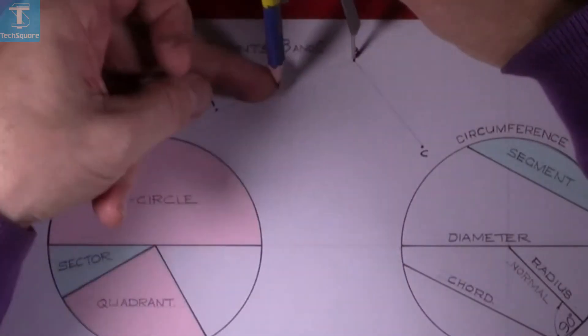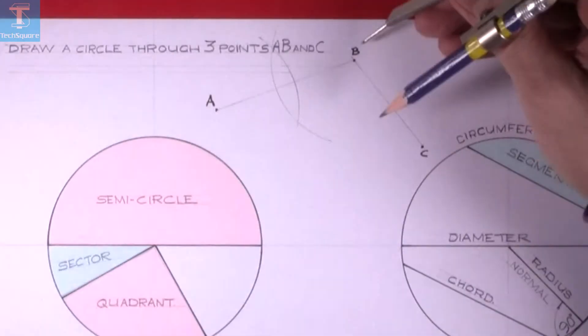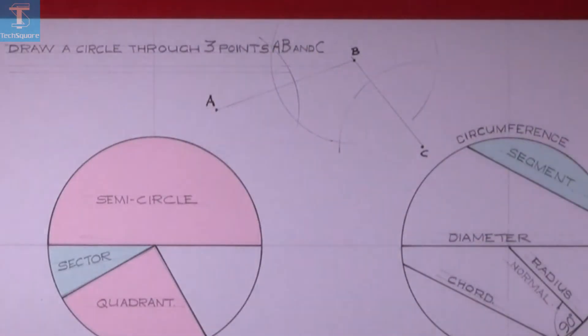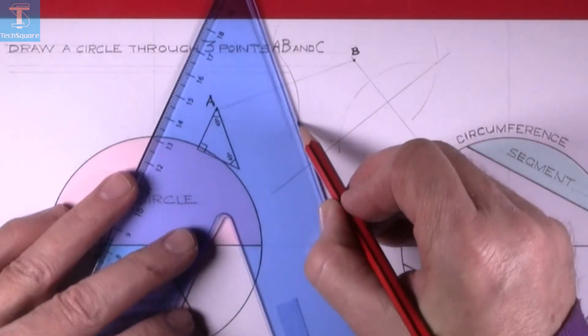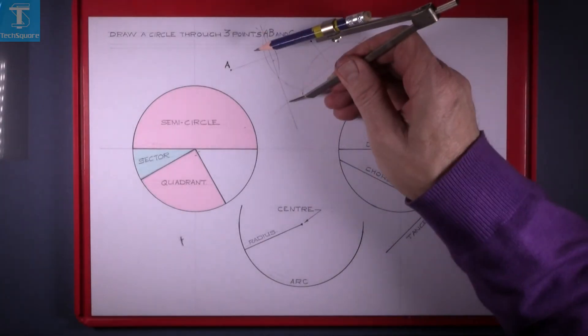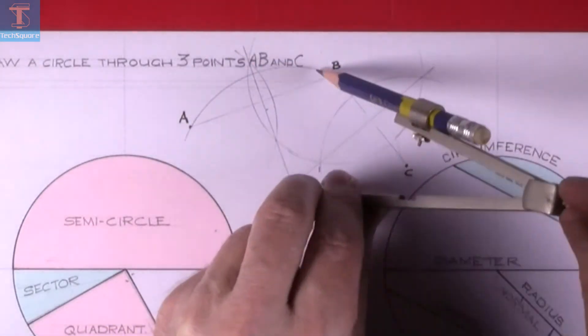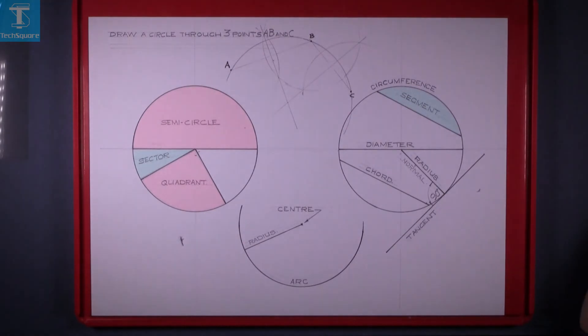When we bisect these and draw the two lines in, that locates the center for the circle that will pass through those three points. Now position the compass in the center you found and draw the circle, and that's this exercise complete.